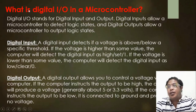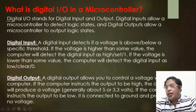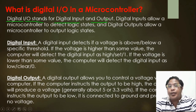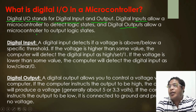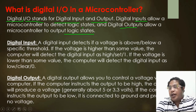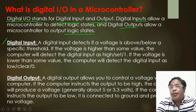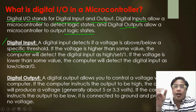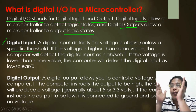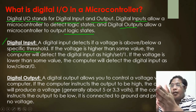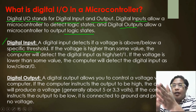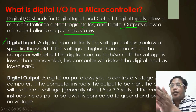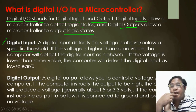What is digital I/O in a microcontroller? Digital I/O stands for digital input and output. Digital input allows a microcontroller to detect logic states, and digital output allows a microcontroller to output logic states. A digital input detects if a voltage is above or below a specific threshold — the threshold is the limitation, or the passage point, of the voltage, and it depends on how the threshold is set.